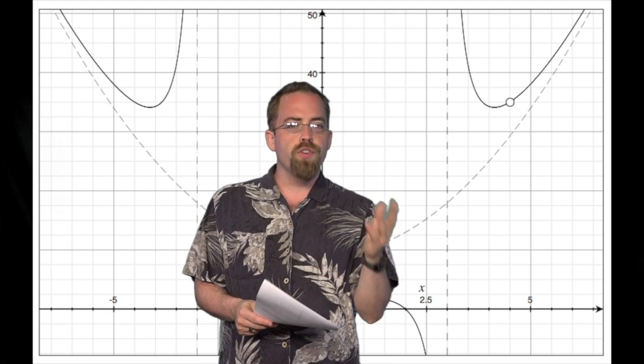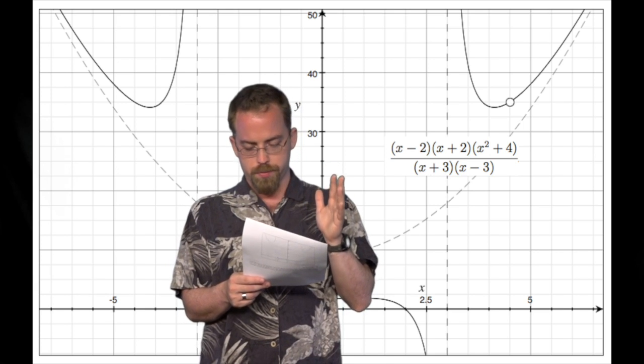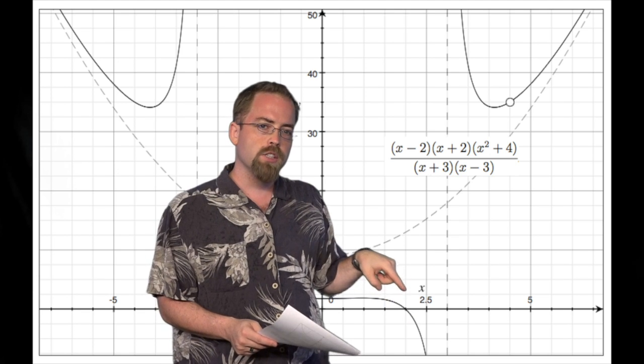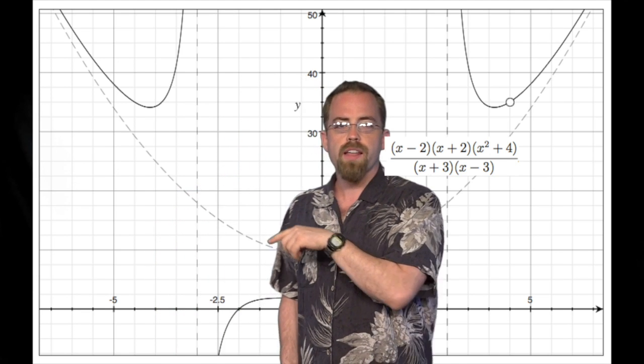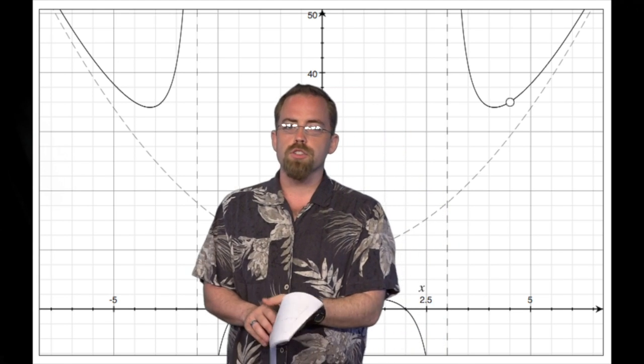But also, if you factor the top, then you see that there is a spot where you get (x minus 2)(x plus 2)(x squared plus 4). The x minus 2 makes this x-intercept right here at 2, and the x plus 2 makes this intercept right here at minus 2.